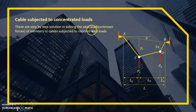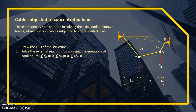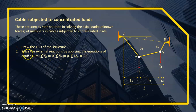This is the step-by-step solution for solving the actual loads or unknown forces of members in cables subjected to concentrated load. Step one: draw the free body diagram of the structure. Step two: solve the external reactions by applying the equations of equilibrium — summation of Fx = 0, Fy = 0, and moment = 0. Note that supports are always pins, not rollers or fixed, since cables don't transmit moment.